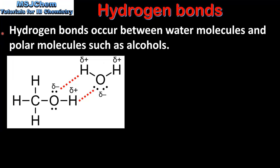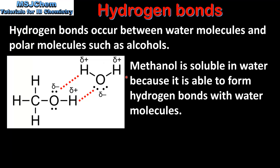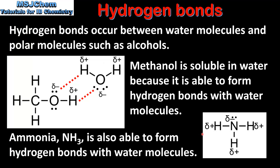Next we look at hydrogen bonds. Hydrogen bonds occur between water molecules and polar molecules such as alcohols. Methanol is soluble in water because it is able to form hydrogen bonds with water molecules. On the left we can see a diagram of hydrogen bonds between a molecule of methanol and a molecule of water. One hydrogen bond occurs between the hydrogen atom on the water molecule and the oxygen atom on the methanol molecule, and a second hydrogen bond occurs between the hydrogen atom on the methanol molecule and the oxygen atom on the water molecule. Ammonia, whose Lewis structure we can see on the right, is also able to form hydrogen bonds with water, and therefore ammonia is soluble in water.